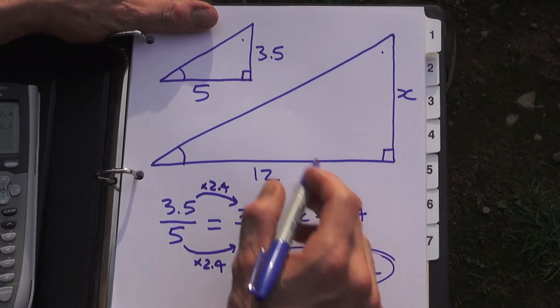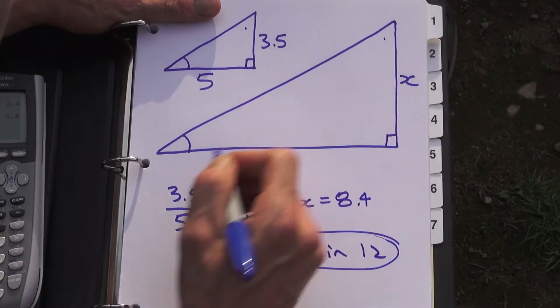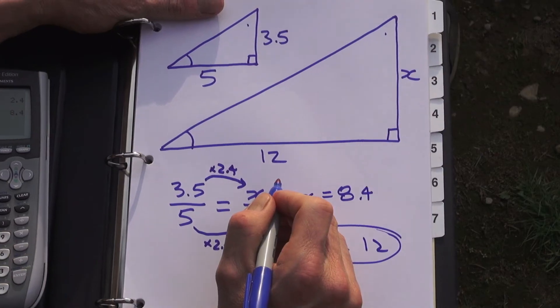All right that's using similar triangles to find that length of that unknown side there which happens to be the rise of the roof pitch.